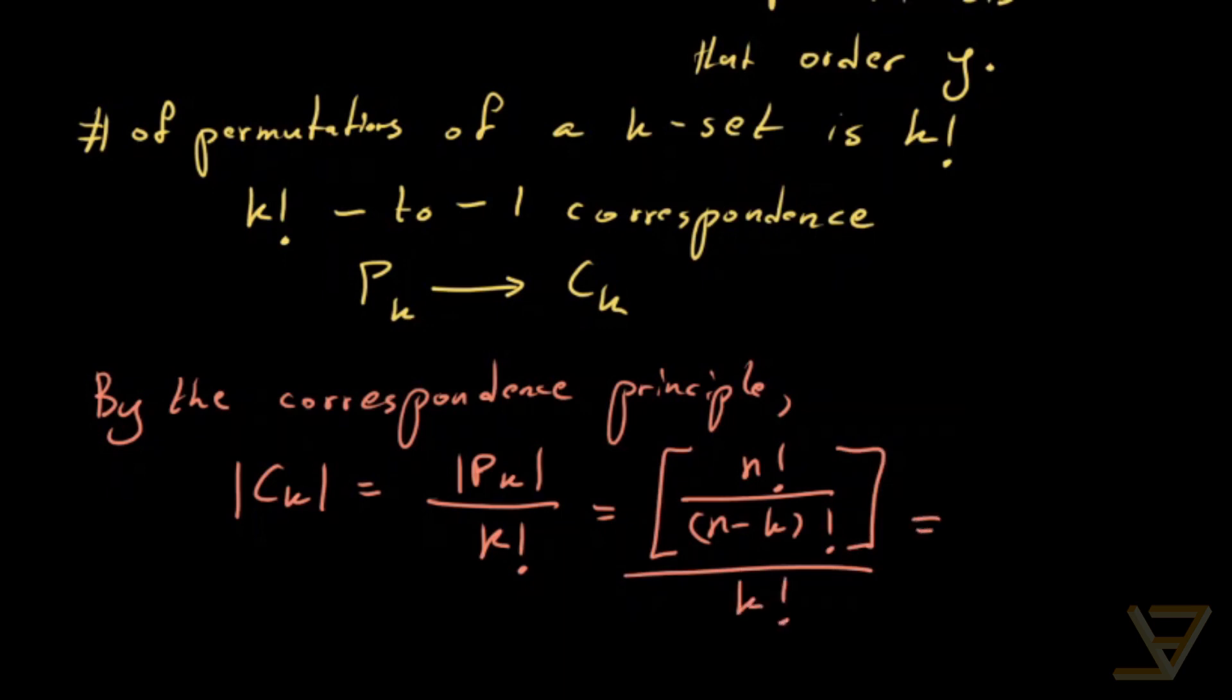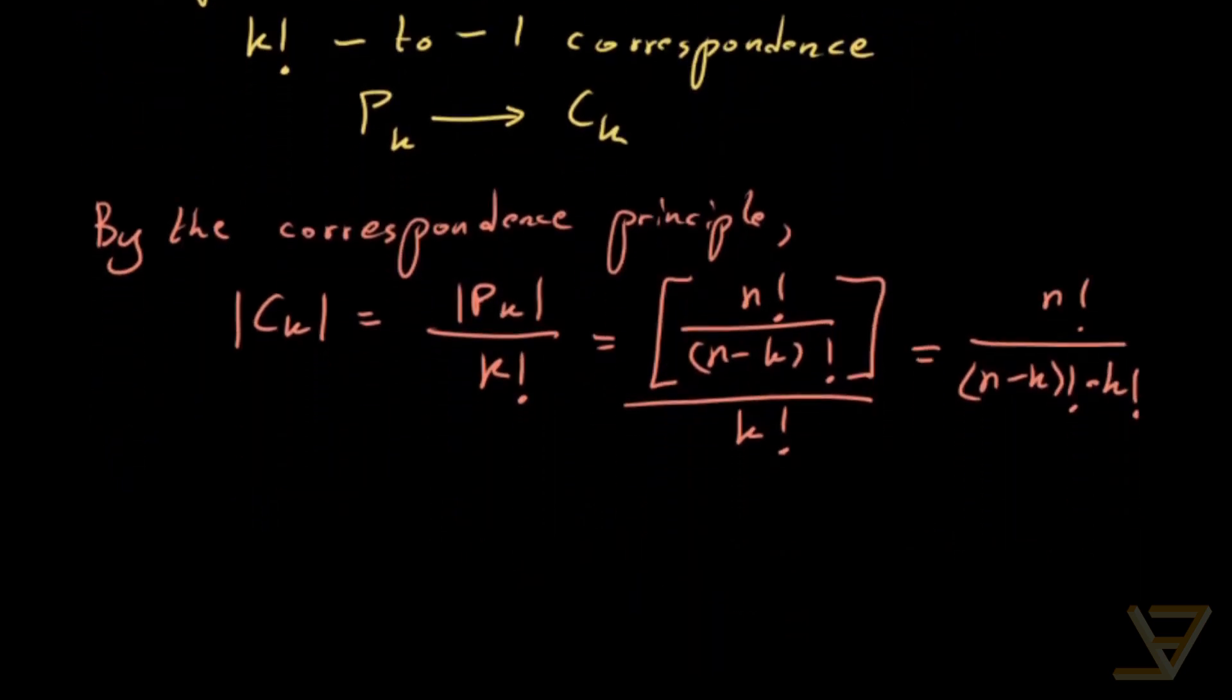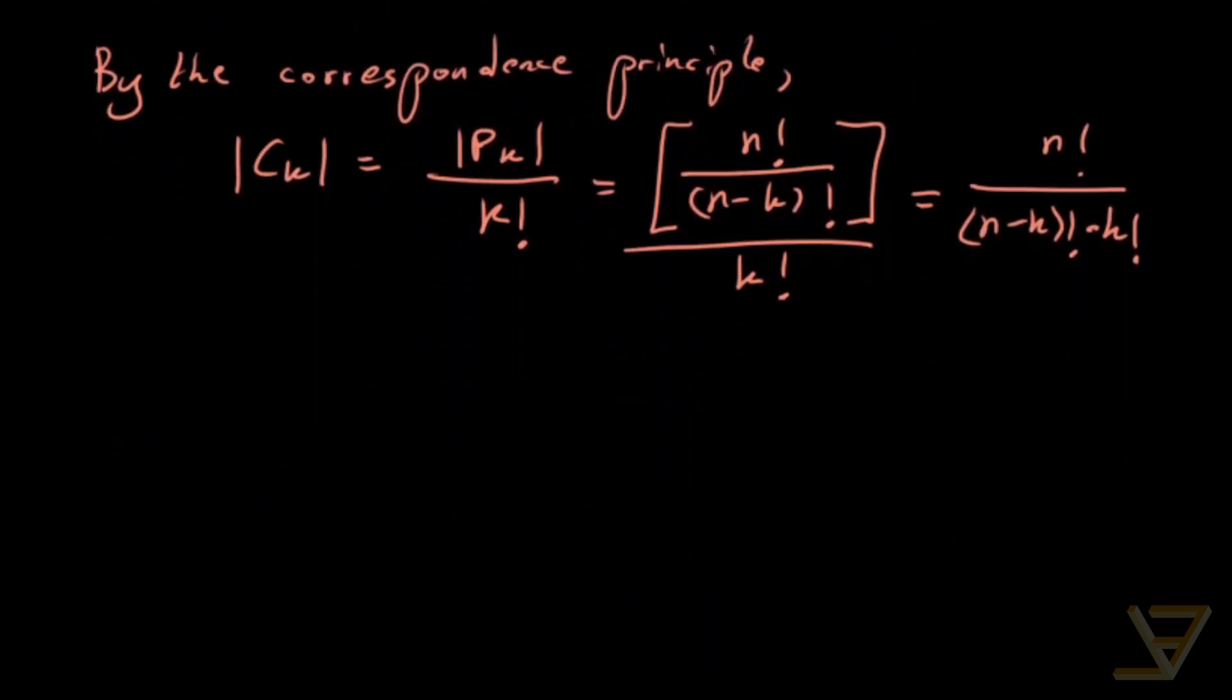And we're just going to rewrite it in a slightly more convenient way, which is n factorial over n minus k factorial times k factorial. And that's our formula. That is the cardinality of the number of k-combinations.